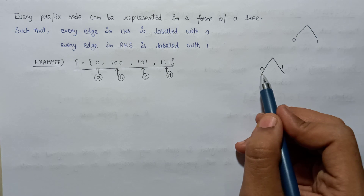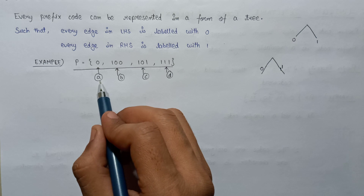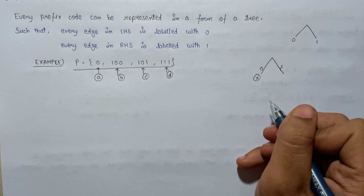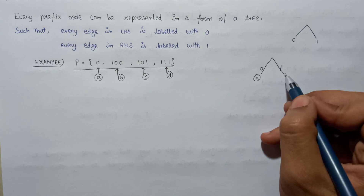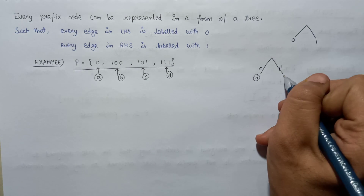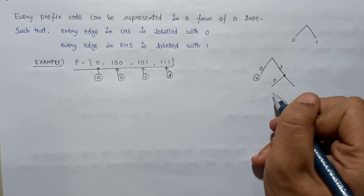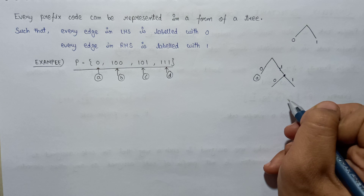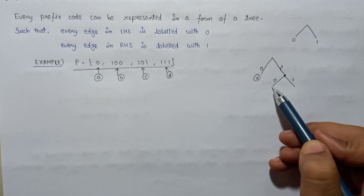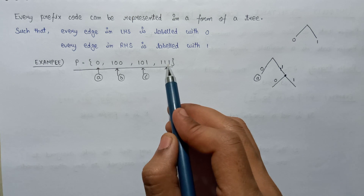Now let's draw the binary tree. Is 0 present in this set? Yes, it is — named A — so we write A here. Is 1 present? No, so we continue. In the LHS we assign 0, in the RHS we assign 1. The code word becomes 10. Is 10 present in this set? No, it is not.